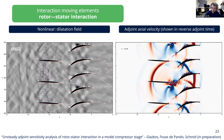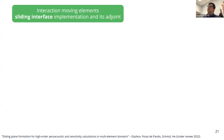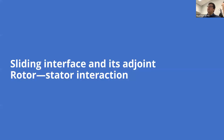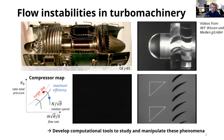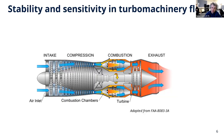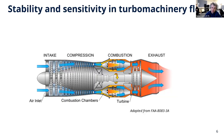A question about the base flow in the eigenvalue computations in the first part: the linearization point is the mean flow — you take a time window and time-average it, making sure the mean flow characteristics are well resolved. That is the stationary point for the linearization.